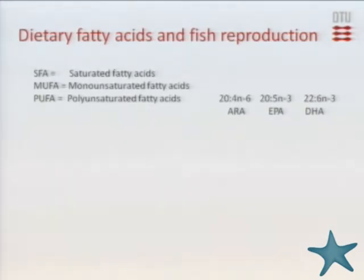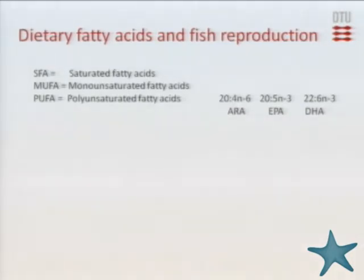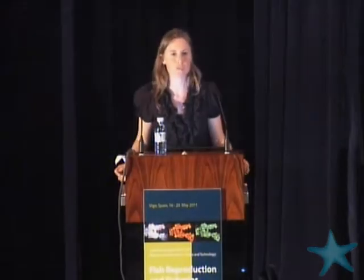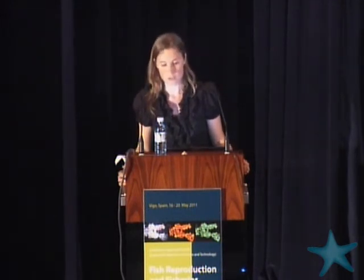Dietary fatty acids and lipids have been identified as major factors determining successful reproduction and the survival of offspring. The most important fatty acids are the polyunsaturated ones — especially ARA, EPA, and DHA. These fatty acids are essential for marine fish, as they cannot produce them themselves. So it is not only the amount of energy that fish gather that is important for reproduction, but also the composition of the lipids, or the quality.